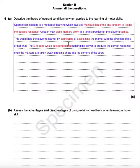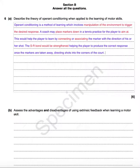This would help the player to learn by connecting or associating the marker on the court with the direction of his or her shot. So we're picturing the tennis coach placing the markers down the line or in the corners of the court. The SR bond would be strengthened, helping the player to produce the correct response once the markers are taken away — which in a match they will be — and that will help them to direct shots into the corners of the court.